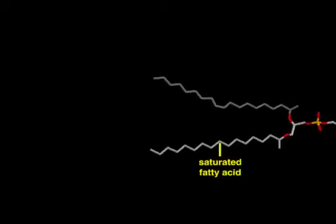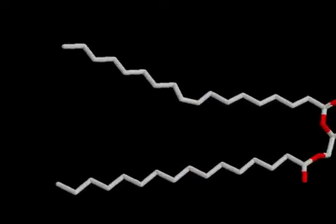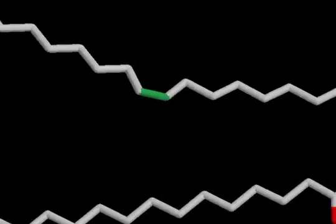The fatty acid tails on phospholipids can be saturated, with no double bonds, or unsaturated, with one or more double bonds. The double bonds are usually in the cis configuration, which introduces sharp kinks.